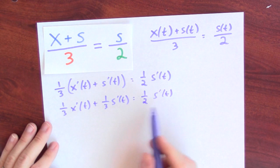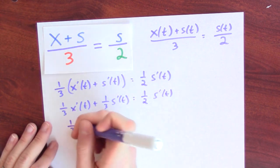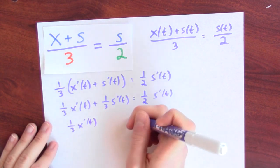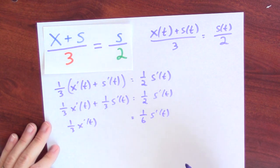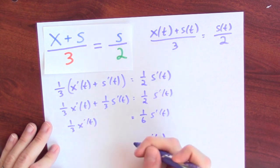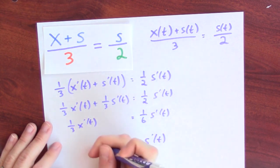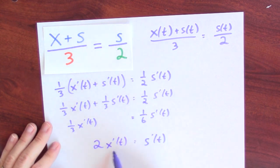I'll subtract 1/3 s prime from both sides. Got 1/3 x prime is 1/6 s prime, because 1/2 minus 1/3 is 1/6. And then I'll multiply both sides by 6. So I find out that s prime, this is the rate of change in the shadow's length is twice x prime. This is the speed with which the person is moving.